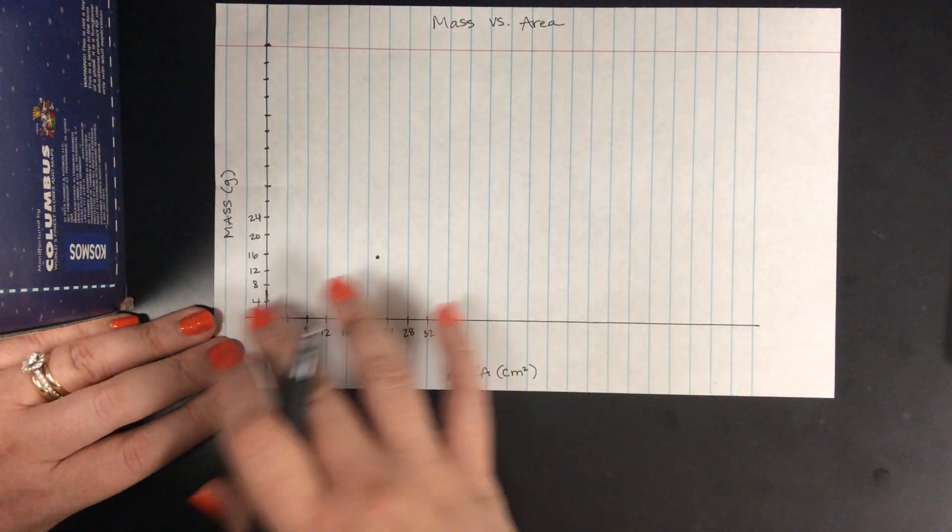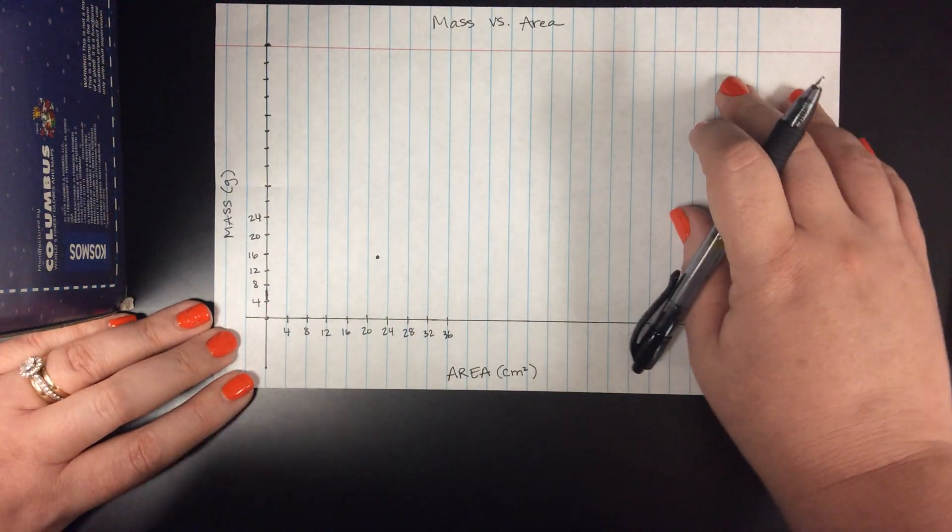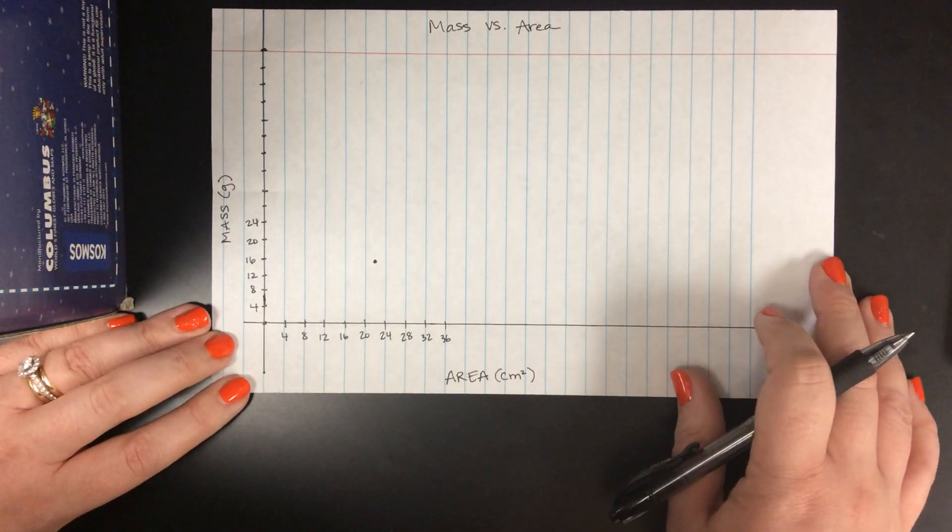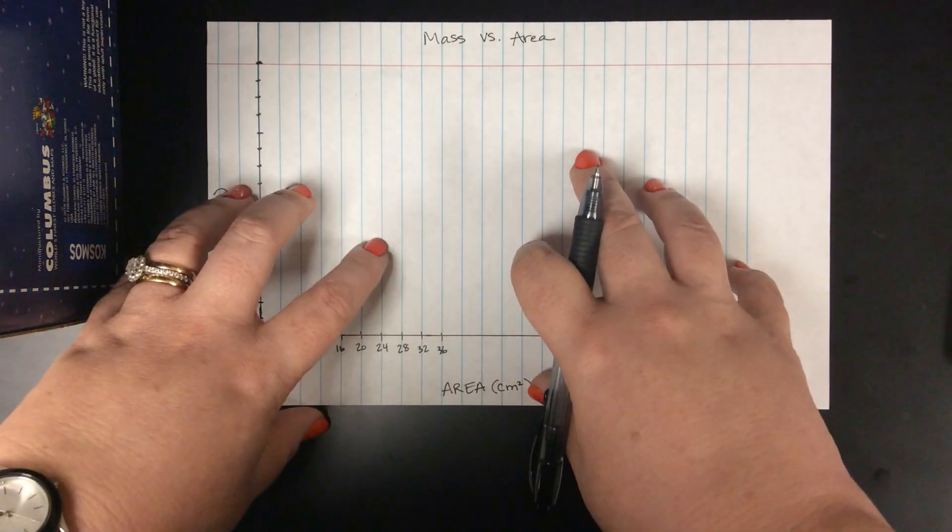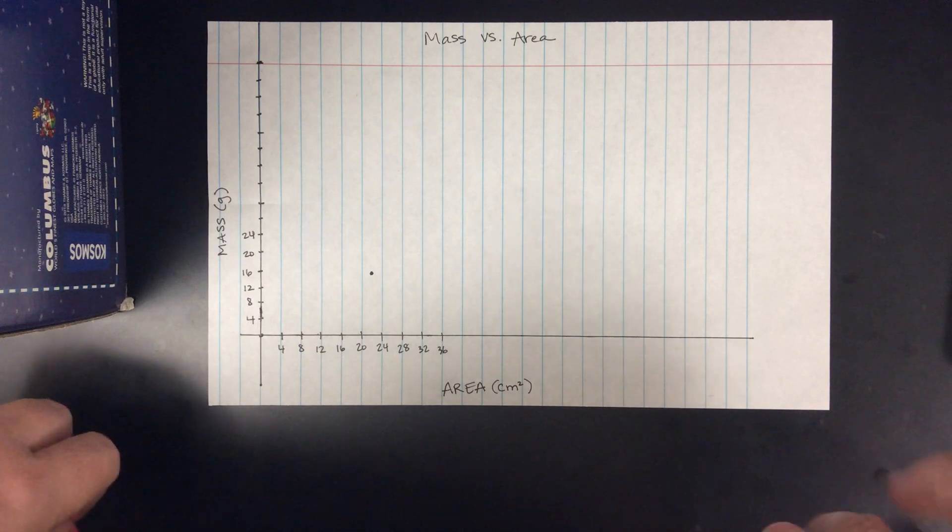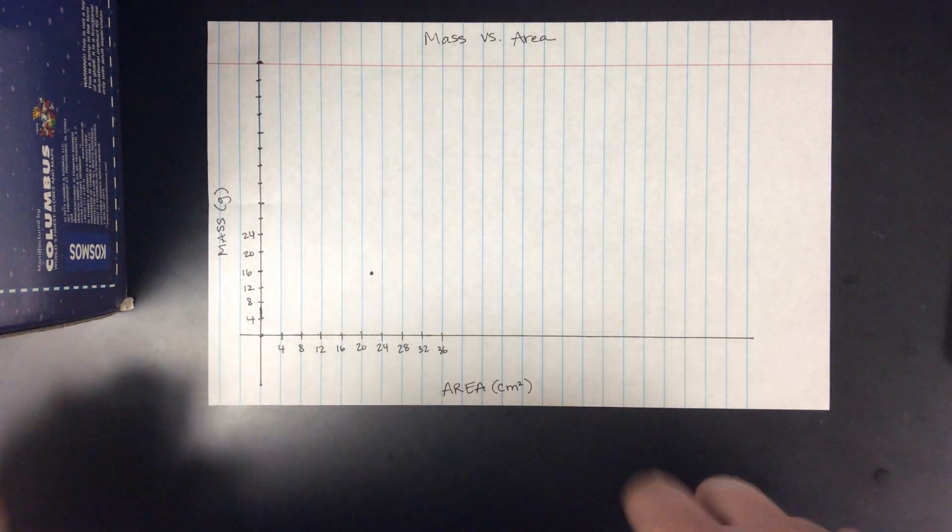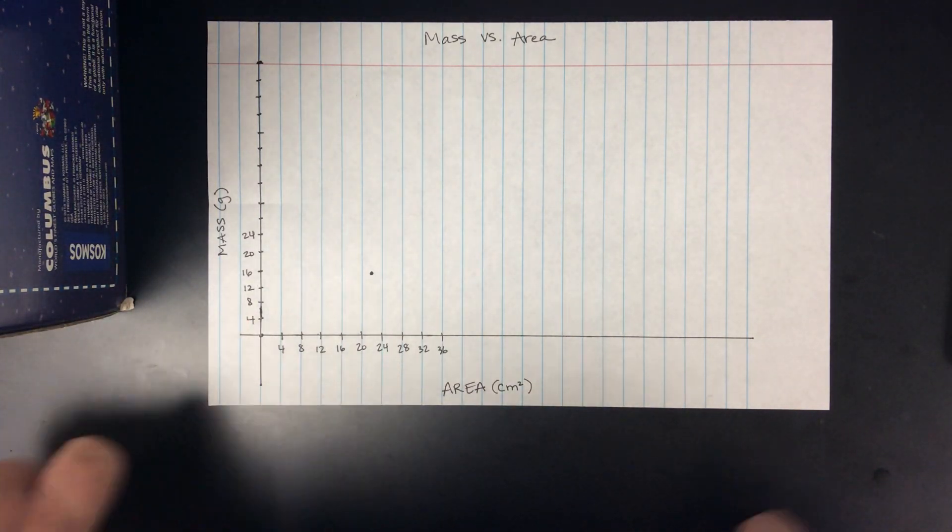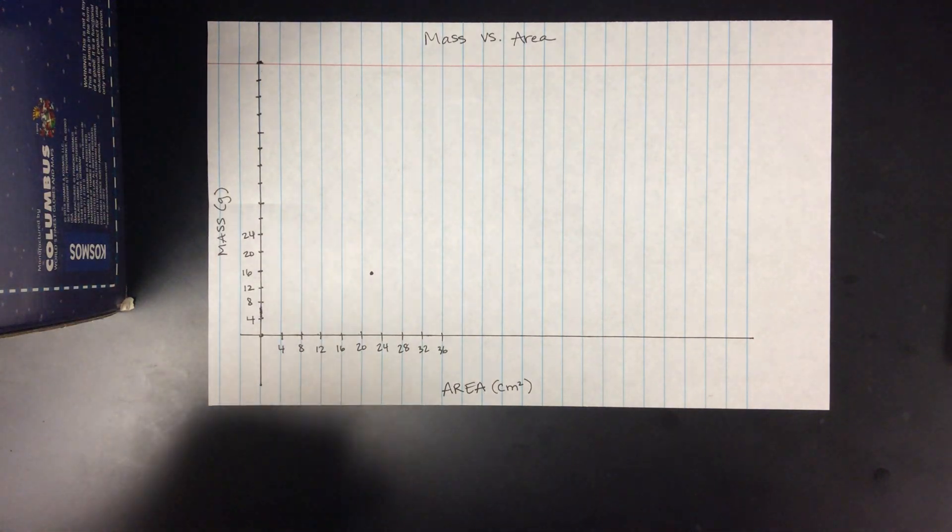After you've plotted all eight of your data points, because you have eight tile pieces, you're going to take this graph. You're going to attach it onto page two in your journal, if you haven't already done so. Then you're going to take a picture and upload it for your assignment today.